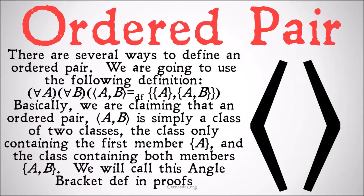There are several ways to define an ordered pair. We are going to use the following definition. For all A and all B, the ordered pair AB — using those angled brackets — equals by definition the class of the class of A, and the class of A and B. Basically, an ordered pair AB is simply a class of two classes: the class only containing the first member, and the class containing both members. We will call this 'angle bracket def' in proofs.